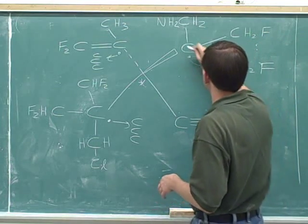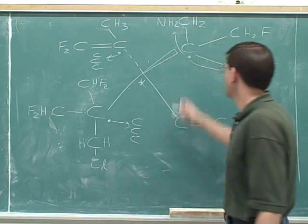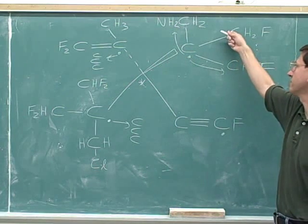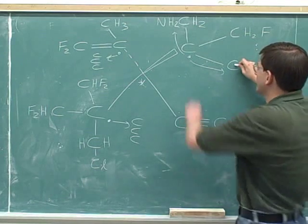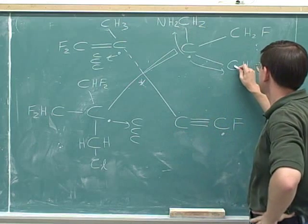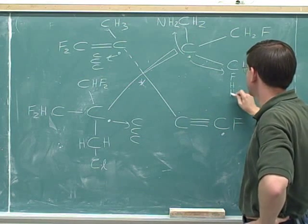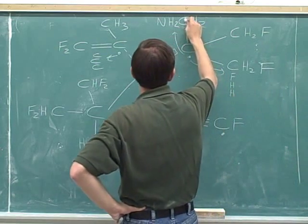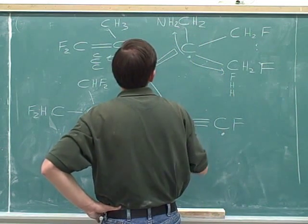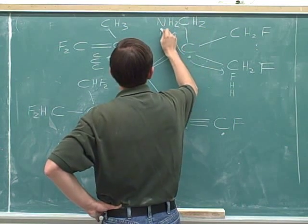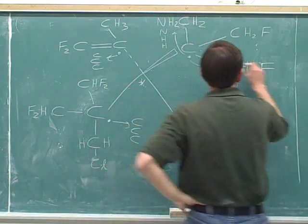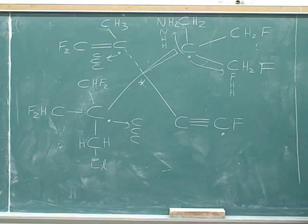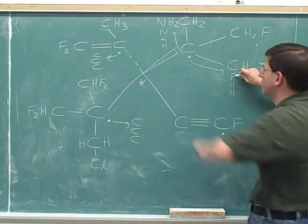Let me put in some arrows to show what our options are. We might go along this path or we might go along this path — there's no point considering this path because it's the same as this one. Here we have a carbon and here we have a carbon, so that's a tie. What are the three things this carbon is attached to? A fluorine, a hydrogen, and a hydrogen. And what are the three things that this carbon is attached to? A nitrogen and two hydrogens. Now we've gotten to the first point of difference: the first atom in the list — this fluorine — is better than this nitrogen.